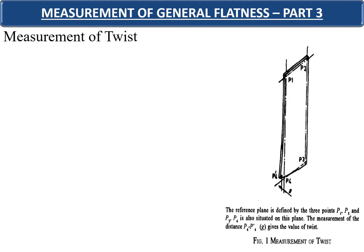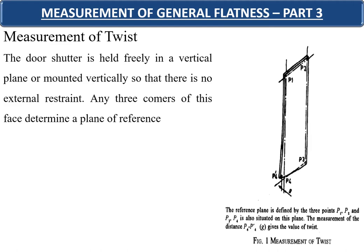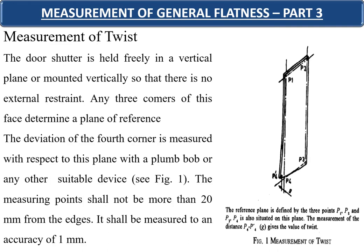Part 3 covers measurement of twist. The door shutter is held freely in a vertical plane or mounted vertically so that there is no external restraint. Any three corners of the face determine a plane of reference. The deviation of the fourth corner is measured with respect to this plane using a plumb bob or any other suitable device. The measuring point shall not be more than 20 millimeters from the edges and shall be measured to an accuracy of 1 millimeter.